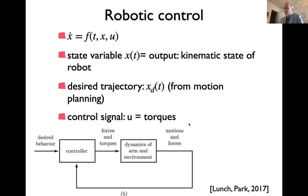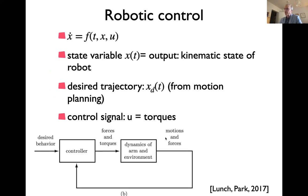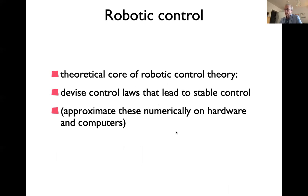So robotic control consists of devising control laws — dependencies of how the control signal U depends on the desired trajectory and the current state or estimate of it — that lead to stable control. The control laws I'll show are always the idea that in practice they are numerically computed on a microprocessor or computer connected to the robot arm. Time courses of control variables U are sent to the hardware controller, which brings about the desired torques.